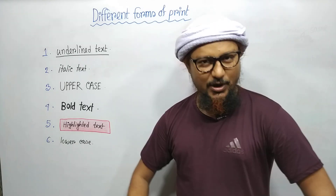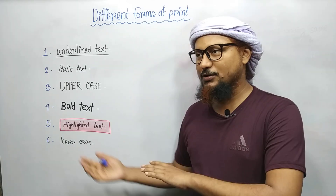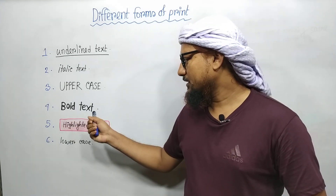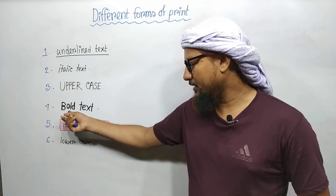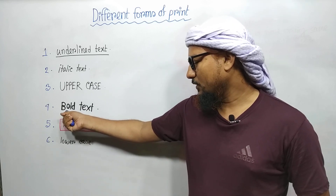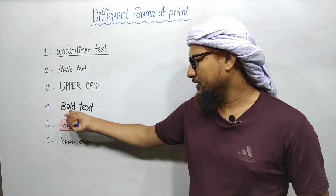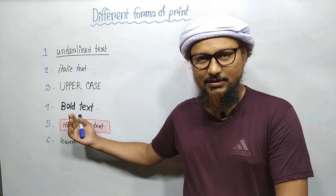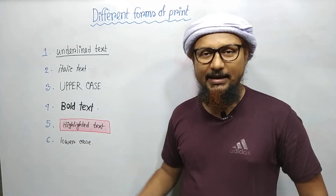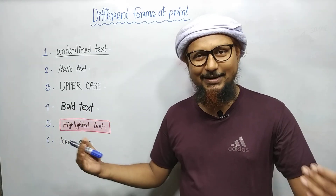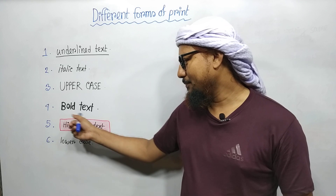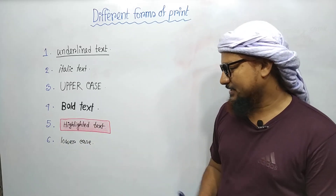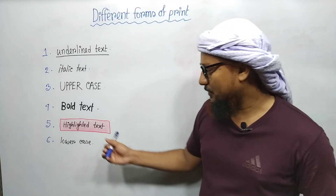Number four is bold text. Bold text means you can see that every single letter is given a kind of extra weight. So these texts are bold — healthy and wealthy, you could say — bold text.